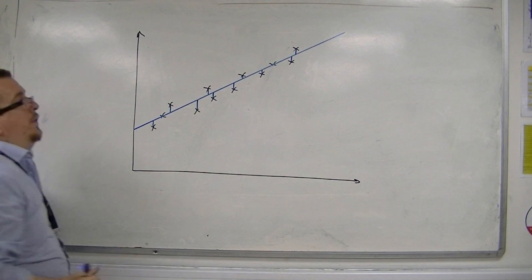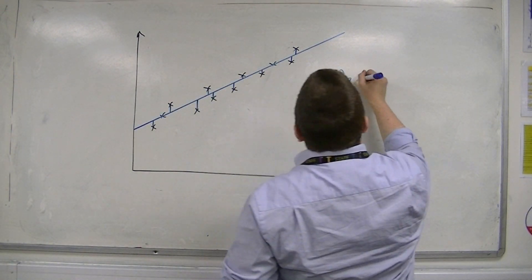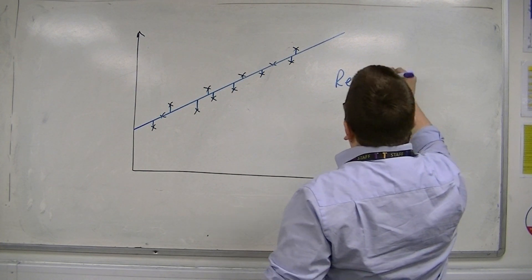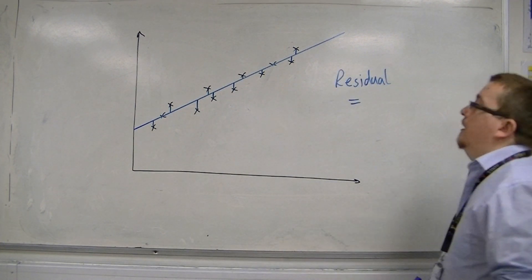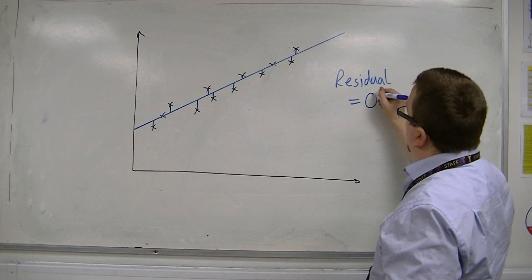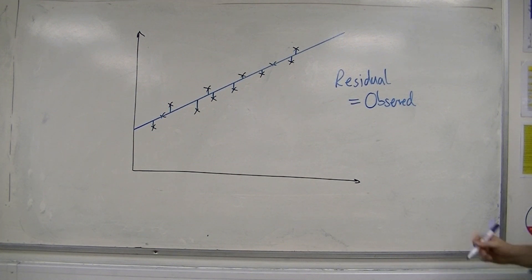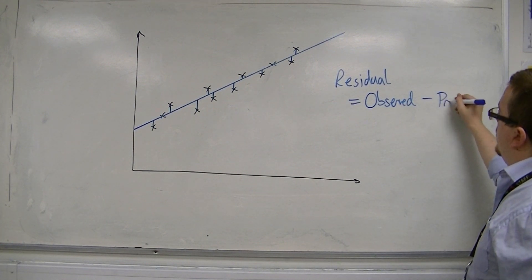Now, residuals can be positive or negative. And to calculate it, a residual can be found by subtracting from the observed data, take away the predicted data.